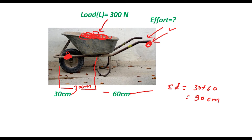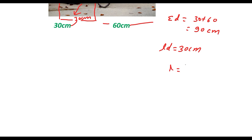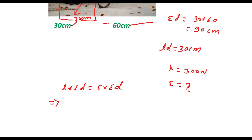Load distance means the distance between the load and the fulcrum, and load distance is given as 30 centimeter. We have load = 300 newton. Using the principle of the lever: load × load distance = effort × effort distance. Load is 300, load distance is 30, effort we have to find, and effort distance is 90.